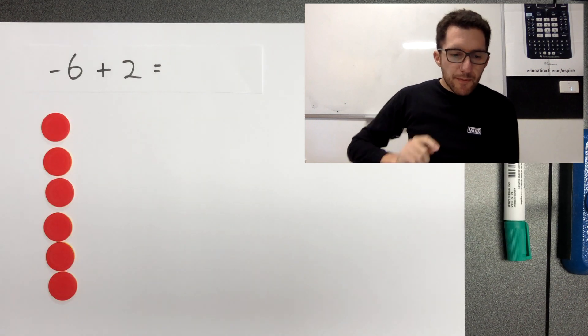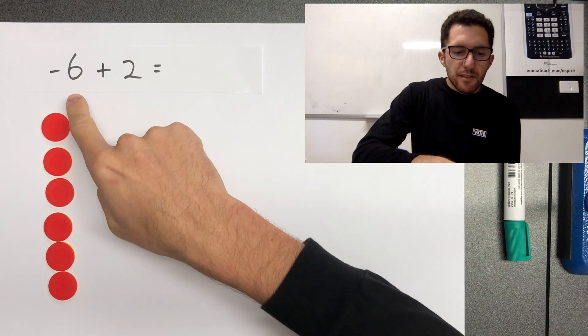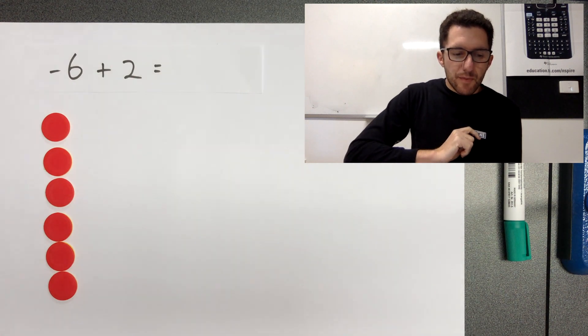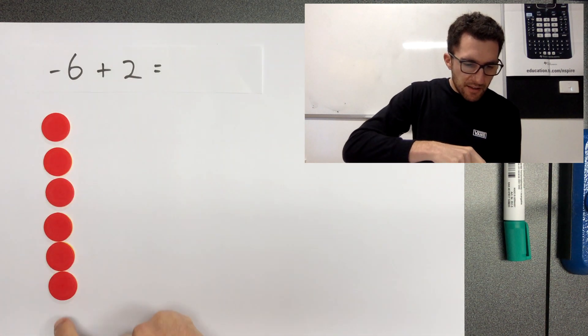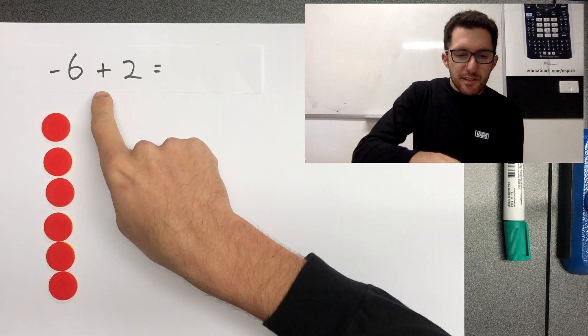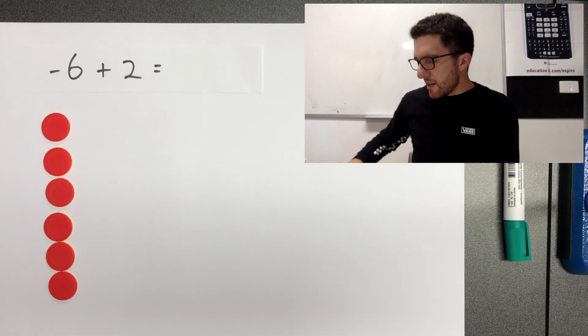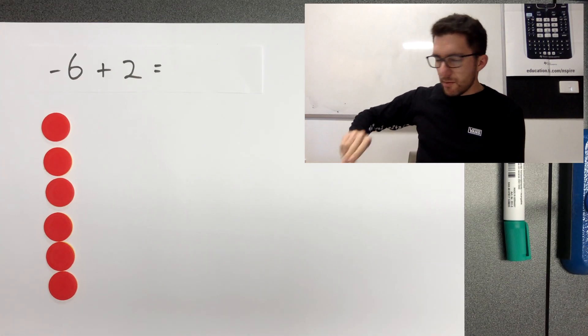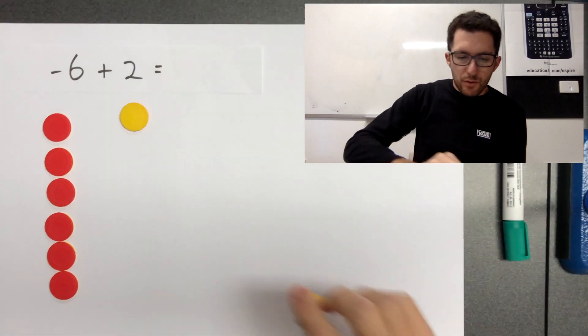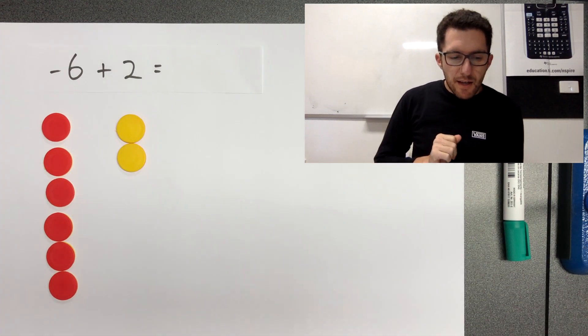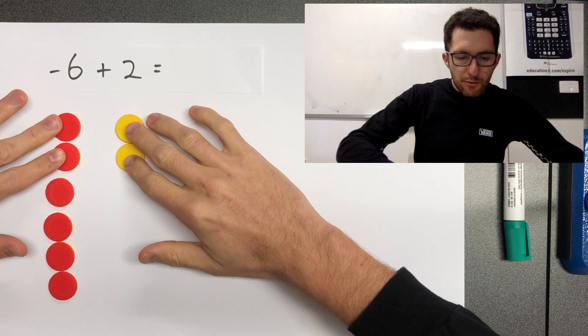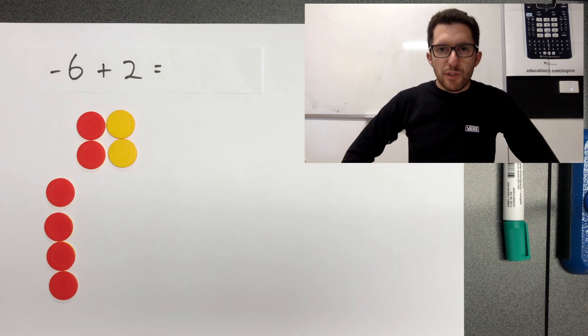Okay, next problem. Negative six plus two. So here's our negative six, our six red tokens plus two. So we're going to add in two. One, two.